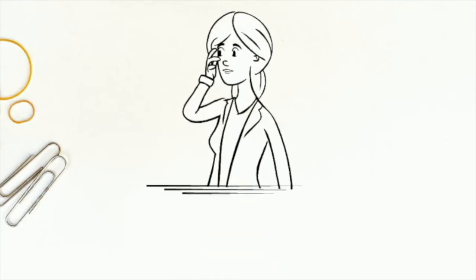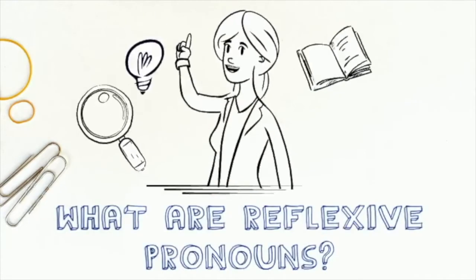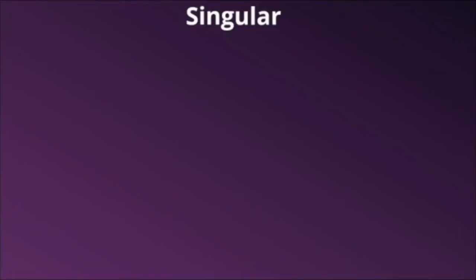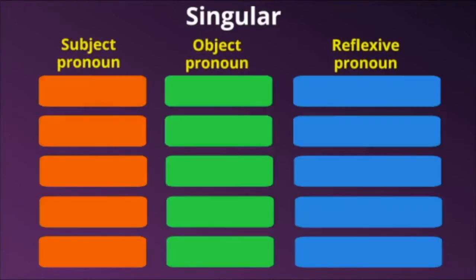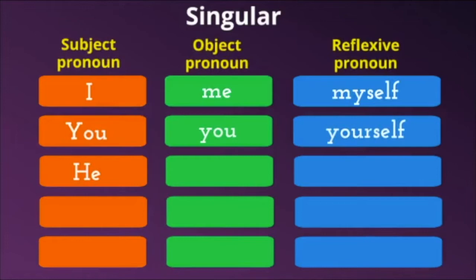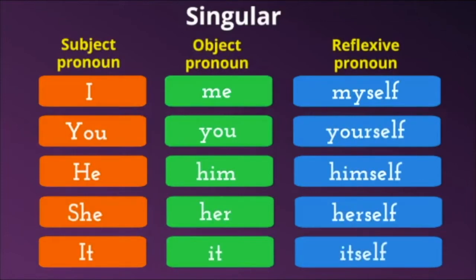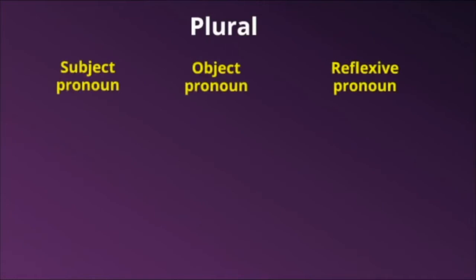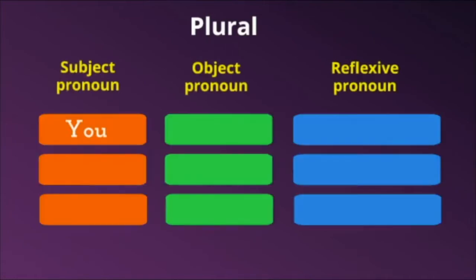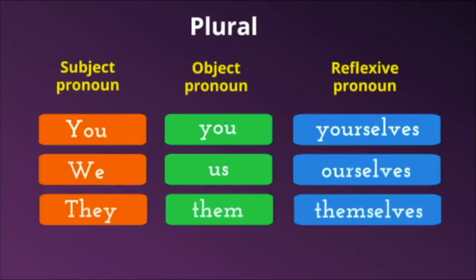So, what are reflexive pronouns? You learned about reflexive pronouns in P4. Do you remember all of them? Reflexive pronouns in singular form are: myself, yourself, himself, herself, and itself. Reflexive pronouns in plural form are: yourselves, ourselves, and themselves.